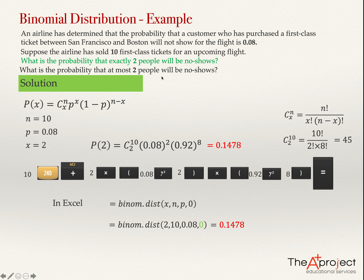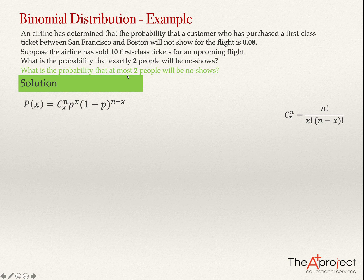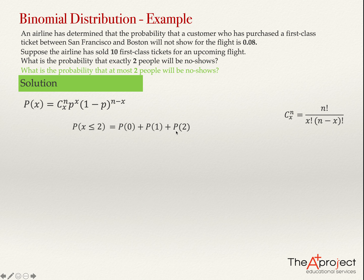Now for the second question: what is the probability that at most two people will be no-shows? Notice that 'exactly' means not cumulative, but 'at most' means cumulative. So we need the probability that x is less than or equal to 2, which equals the probability of 0 plus the probability of 1 plus the probability of 2.